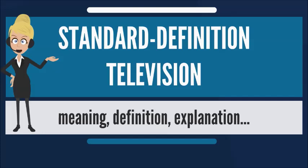In North America, digital SDTV is broadcast in the same 4:3 aspect ratio as NTSC signals, with widescreen content being center cut. However, in other parts of the world that used the PAL or SECAM color systems, standard definition television is now usually shown with a 16:9 aspect ratio, with the transition occurring between the mid-1990s and mid-2000s. Older programs with a 4:3 aspect ratio are broadcast with a flag that switches the display to 4:3.